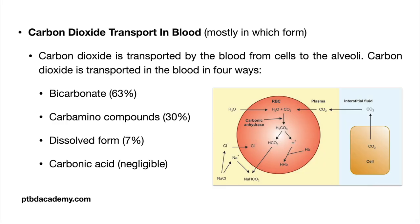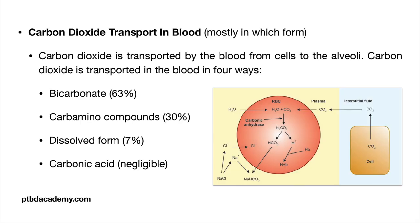The first question is on carbon dioxide transport in blood — specifically, which is the most common form. Carbon dioxide is transported by blood from the cells to the alveoli in four ways: dissolved form (7%), carbonic acid (negligible), bicarbonate form (around 63%), and carbamino compounds — CO₂ attaching to hemoglobin and plasma proteins (around 30%).